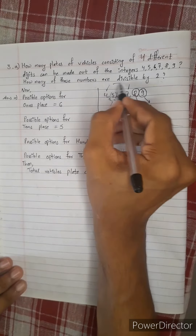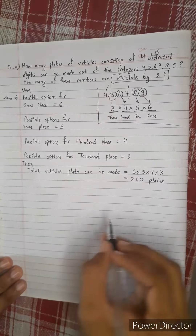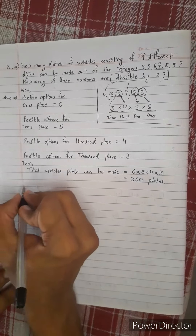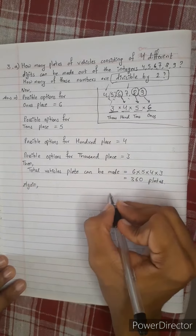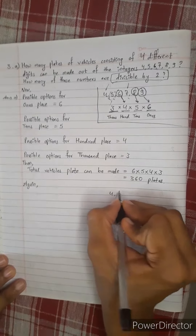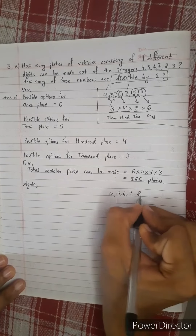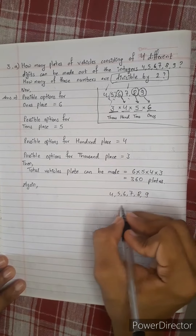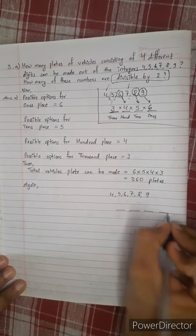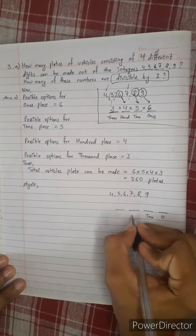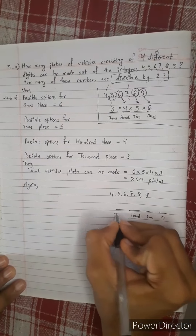For the 2nd part, I will add divisible by 2. Again, the numbers are 4, 5, 6, 7, 8, 9, and I will add 1, 10, 100, 1000.